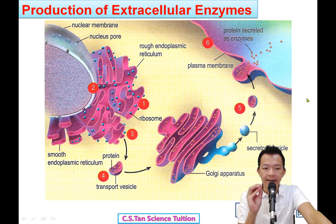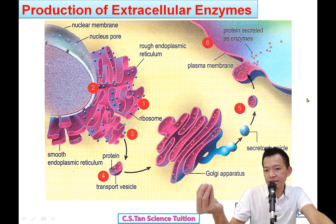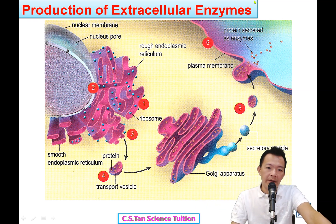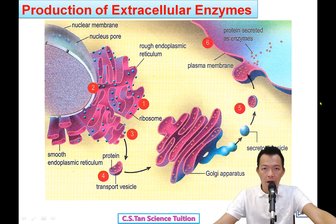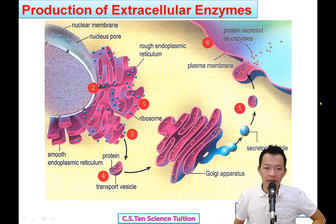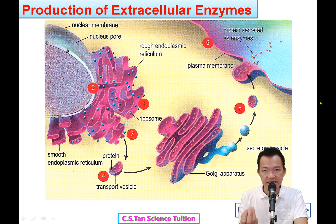And now, new topic: the production of extracellular enzymes. How does the cell make the enzyme and excrete it — 把 enzyme 放出来? Actually, besides the production of extracellular enzymes, intracellular enzymes are made almost the same way — 其实也是一模一样的 — 只是它做好过后没有被放出来罢了. Remember, this is a past-year question. They ask you to explain briefly the production of extracellular enzymes — 解释一下 extracellular enzyme 到底怎样制造的.